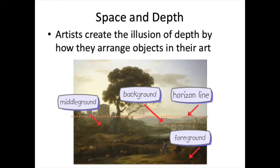Artists use space and depth to make an artwork look more realistic. Typically an artist is working on a flat piece of paper, but they can create the illusion of depth by how they arrange their objects on that paper — by using foreground and middle ground. An artist can make something look close to you by putting it in the foreground, or make something look really far away by making it small and putting it in the background. Let's take a closer look at each of those areas.